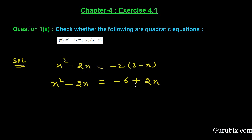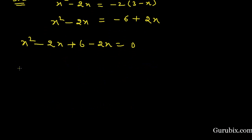We shall take the values in the right hand side to the left hand side. Then we have x square minus 2x plus 6 minus 2x equals 0. So this means we have x square minus 4x